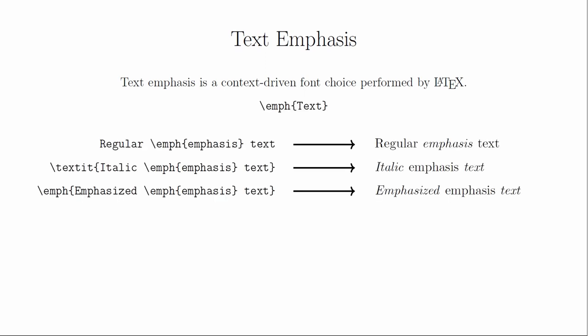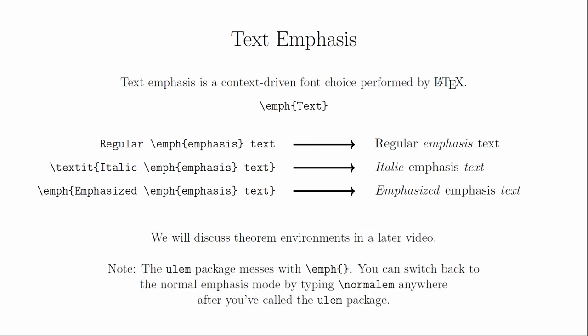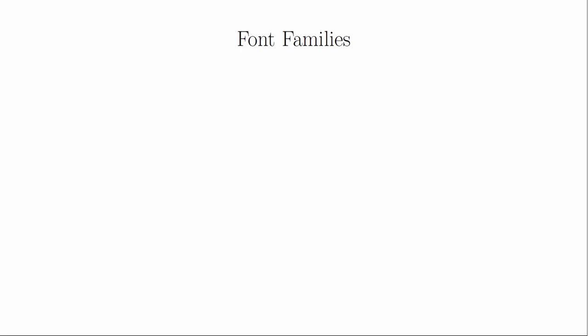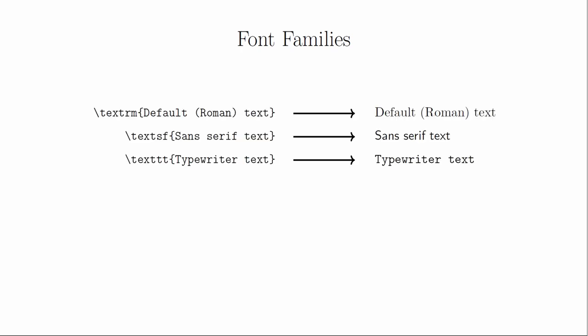If you are using font styles to emphasize certain words or phrases, you might want to use text emphasis. This tells LaTeX that you want the text emphasized, but it will choose how to do it depending on the surrounding context. This is probably the best choice any time you are working with multiple environments, such as when you're writing definitions or theorems. LaTeX also gives you a set of options for changing the font itself. There are three basic font families: Roman, sans serif, and typewriter. The default is Roman, which is good enough for almost everything. I will use the typewriter font when I need a monospaced look. Notice that these are applied like functions and not as switches.